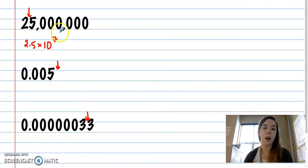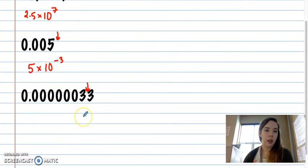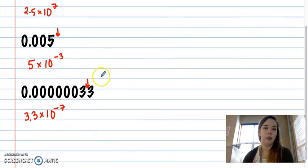The 5 also counts for a total of 7th. So this one would be 5 times 10 to the negative 3rd power. Because after my arrow, it's 1, 2, 3 to my decimal. And then this last one would be 3.3. And then from my arrow to my decimal is 1, 2, 3, 4, 5, 6, 7. So negative 7.